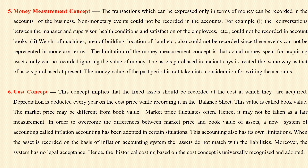The fifth one is money measurement concept. According to this concept, only transactions associated with money should be recorded in the books of account — first in the journal, which is the primary book, then posted into the ledger, which is the secondary book. Non-monetary items should not be recorded. Non-monetary transactions like conversations between managers and other parties, and the height, length, location of buildings and land, should not be recorded.